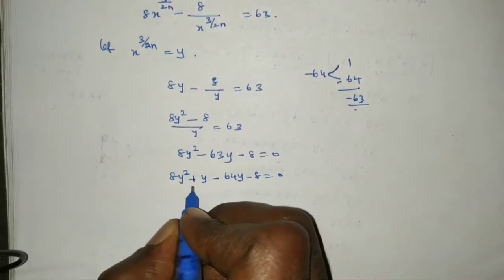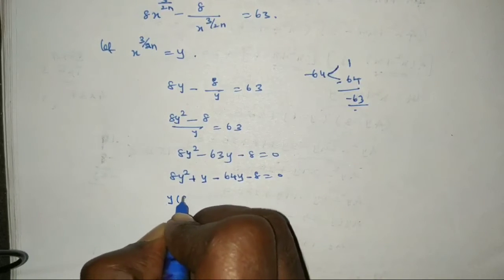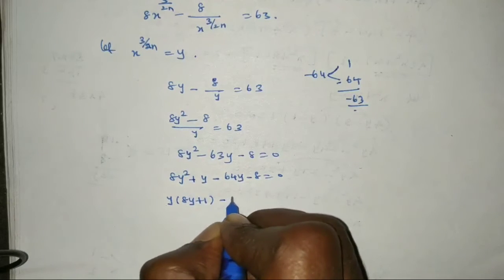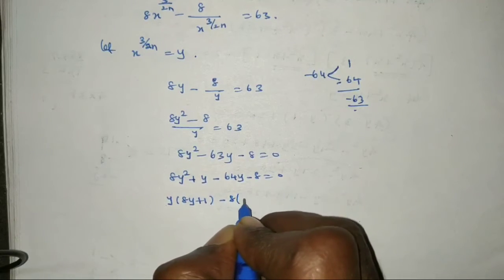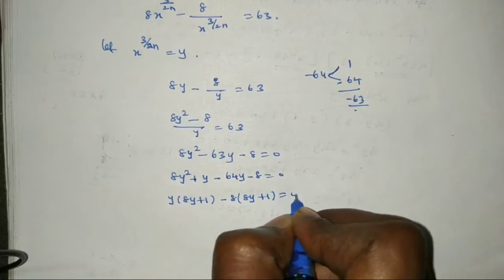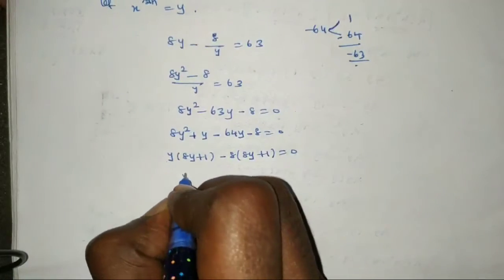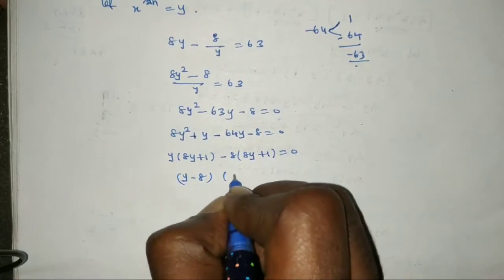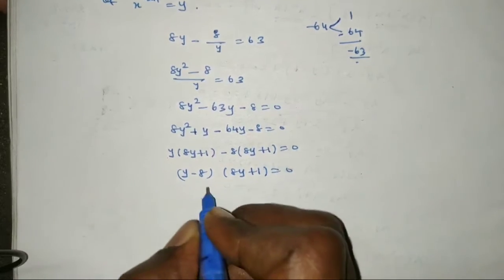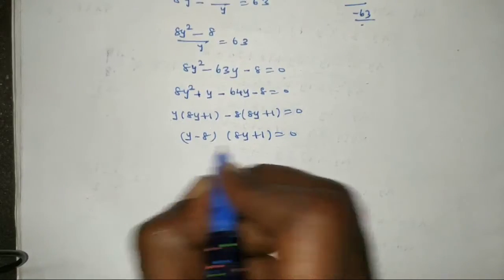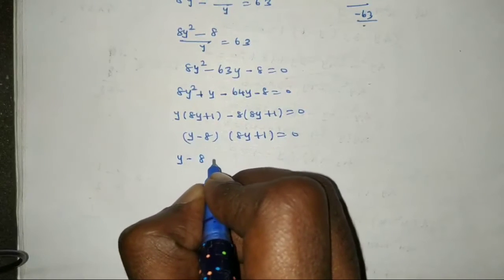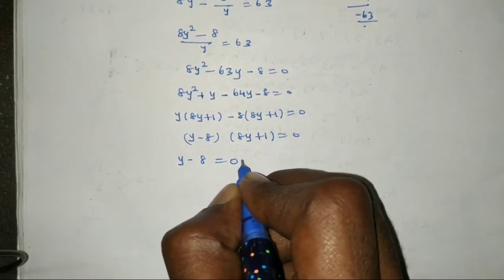Factoring by grouping: y times (8y plus 1) minus 8 times (8y plus 1) equal to 0. So (8y plus 1)(y minus 8) equal to 0. Therefore y minus 8 equal to 0 or 8y plus 1 equal to 0.